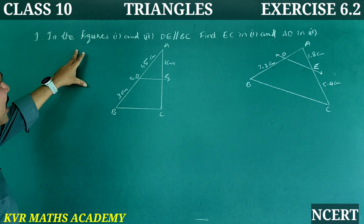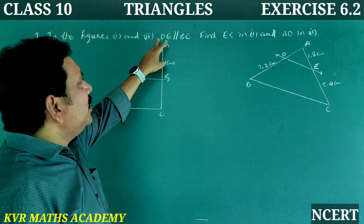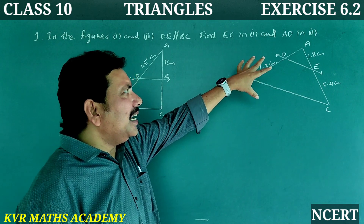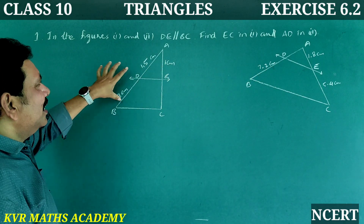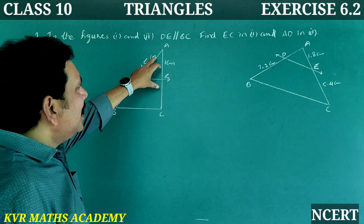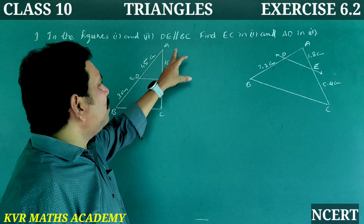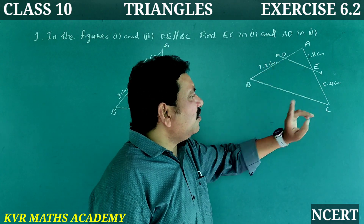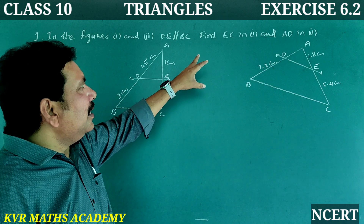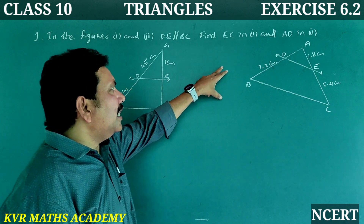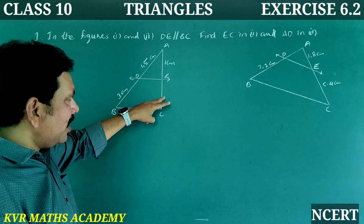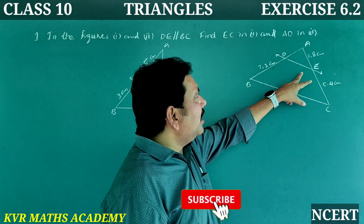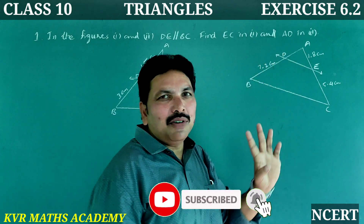First question: In figures 1 and 2, DE is parallel to BC. Find EC in figure 1 and AD in figure 2. In both figures DE is parallel to BC. We have to find EC in the first figure, and AD in the second figure.